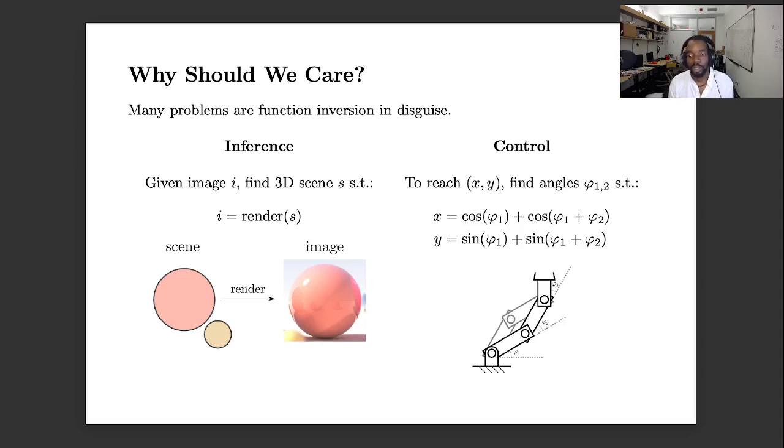In control, we know how to write a kinematic function which says given some angles of some robot arm what is the position of the hand. What we want to do is to say what angles would allow us to get to some desired target position, that is to invert the kinematic function.